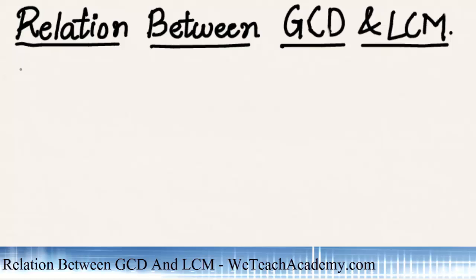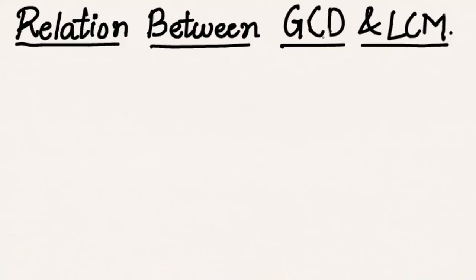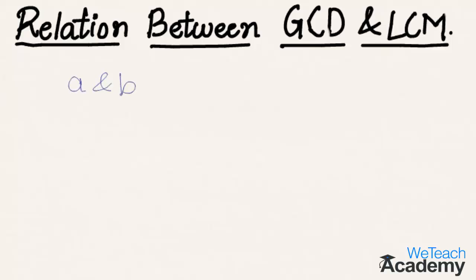Welcome to VDG Academy. In this presentation we are going to discuss the relation between greatest common divisor and least common multiple. In our previous video we already discussed what GCD and LCM are, and in this video we discuss their relation. Let us consider two numbers A and B, with their LCM and GCD denoted as L and G respectively.